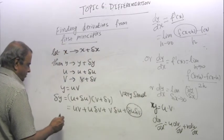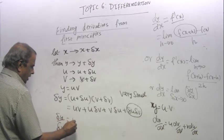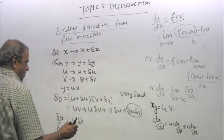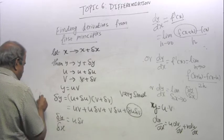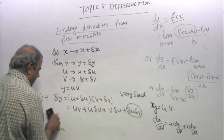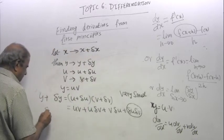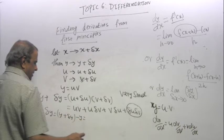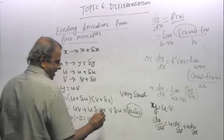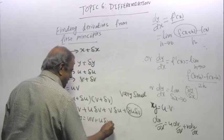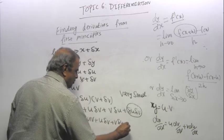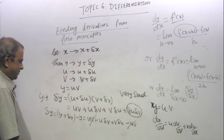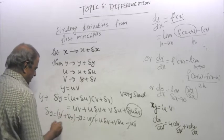Now, what is delta y by delta x? Will be u delta v... sorry, sorry, sorry. This is y plus delta y. So what is delta y? Delta y will be y plus delta y minus y. That means this work uv plus u delta v plus v delta u minus uv, because I have already ignored that. So the uv's can be cancelled, the y's can be cancelled, so I get delta y.